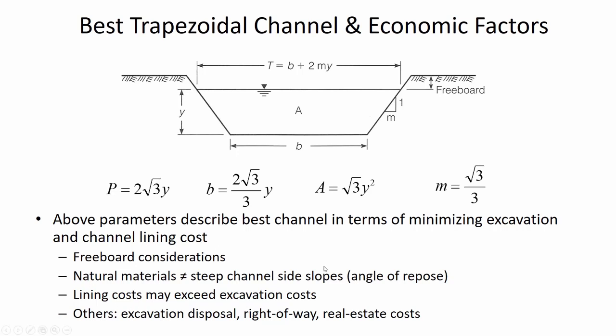Other economic factors include having no good place to put excess excavated soil, or if real estate is particularly expensive. A trapezoidal channel with one-to-two side slopes is much wider than the best trapezoidal shape, so in a high-value neighborhood where excess right-of-way is prohibitively expensive, it may be cheaper to line the channel with concrete rather than paying for the extra channel width.